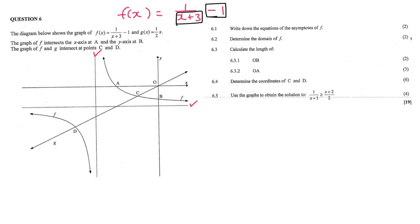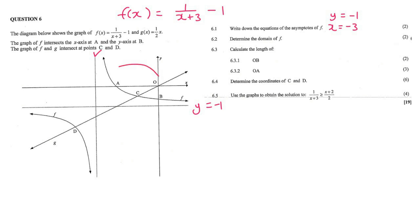The answer will be x equals negative 3, and the other answer is y equals negative 1. This one is y equals negative 1 because this value is minus 1, and then because it's plus 3 it actually means that the graph has gone three places to the left — that's why x equals negative 3.